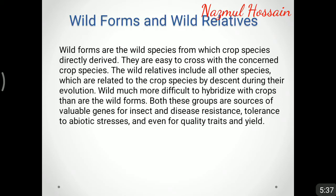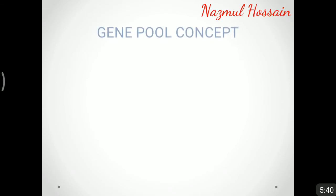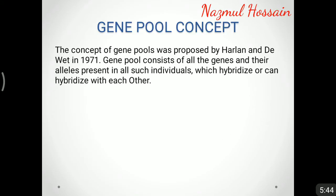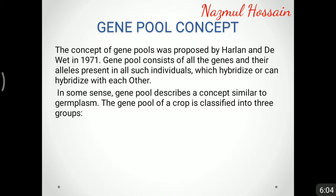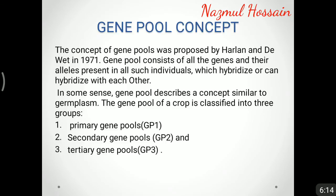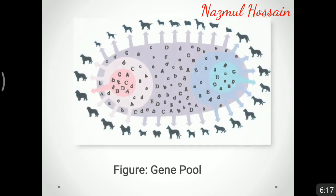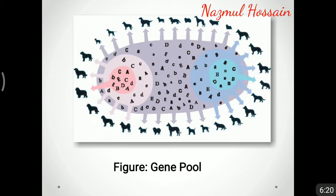The concept of gene pools was proposed by Harlan and de Wet in 1971. A gene pool consists of all the genes and their alleles present in all individuals which hybridize or can hybridize with each other. The gene pool of a crop is classified into three groups: the primary gene pool, the secondary gene pool, and the tertiary gene pool.